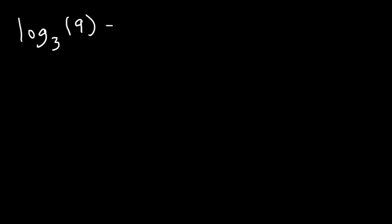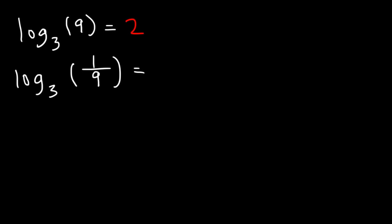What is log base 3 of 9? We know we have to multiply two 3s to get to 9 — 3 squared is 9 — so the answer is 2. Now what about log base 3 of 1 over 9? That is going to be negative 2. 3 squared is positive 9, but 3 to the negative 2 gives 1 over 9, because the negative exponent moves the 9 from the top to the bottom.